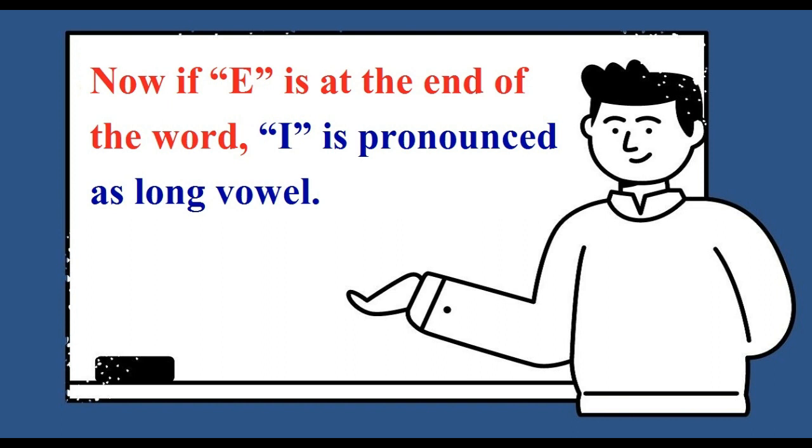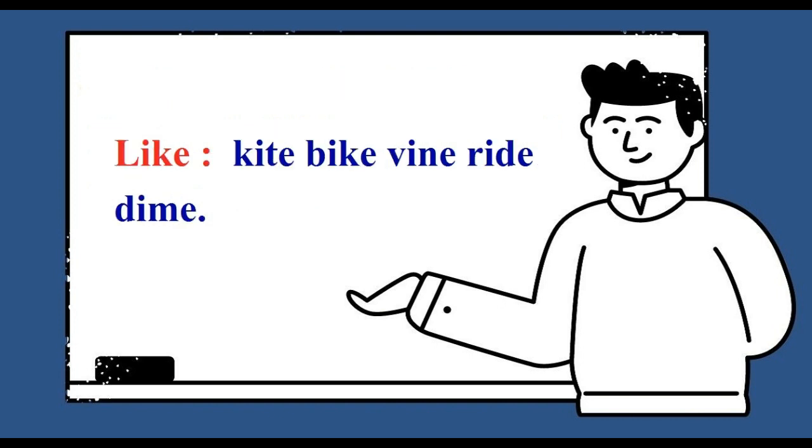Now if E is at the end of the word, I is pronounced as long vowel, like: kite, bike, vine, ride, dime, time.